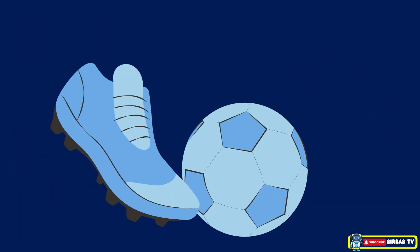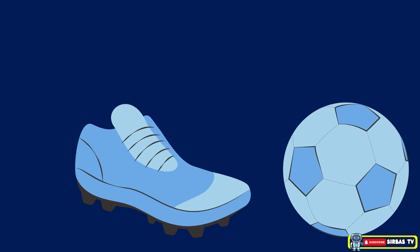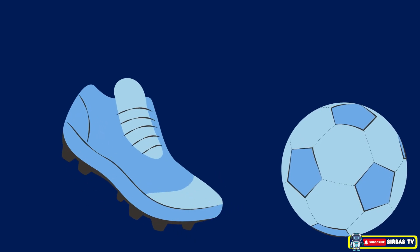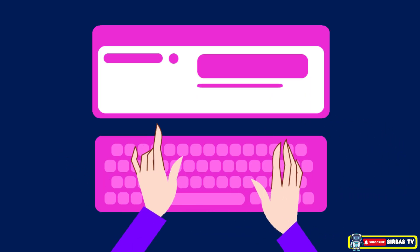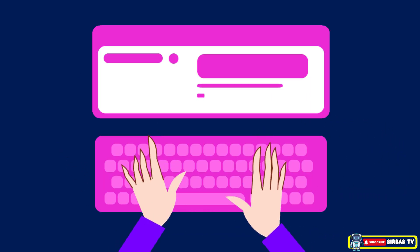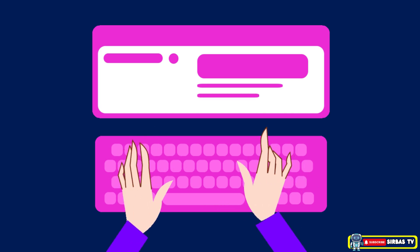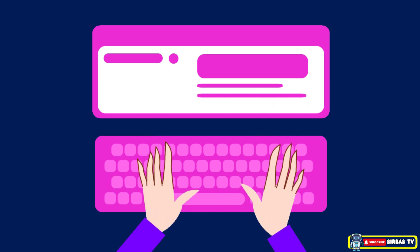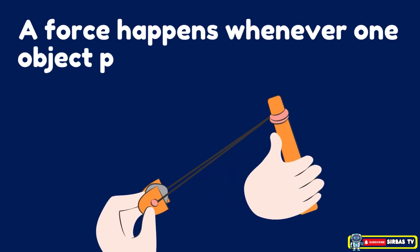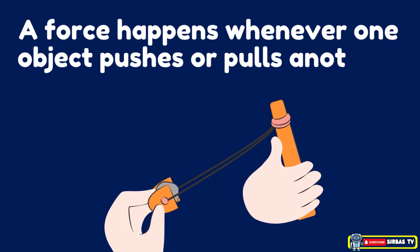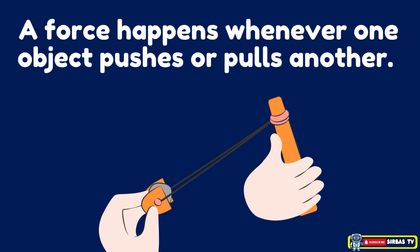For example, when you kick a ball, your foot exerts the force and the ball receives it. When you press a key on your keyboard, your finger exerts the force and the key receives it. So basically, a force happens whenever one object pushes or pulls another.